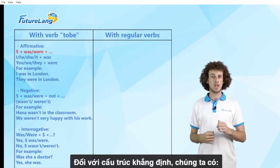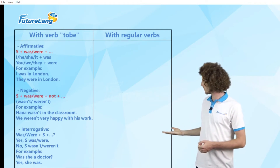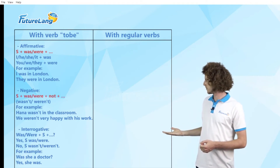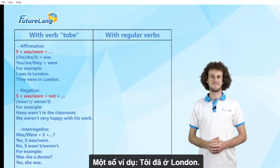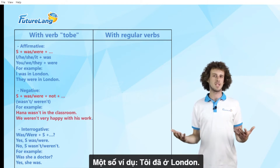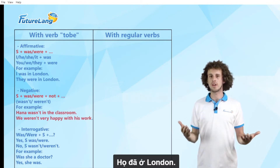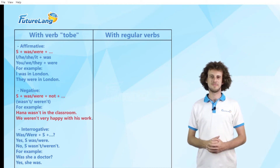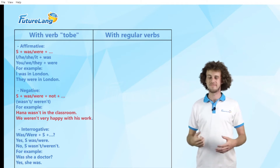And for the negative form, for example: 'Hannah wasn't in the classroom.' 'We weren't very happy with his work.'